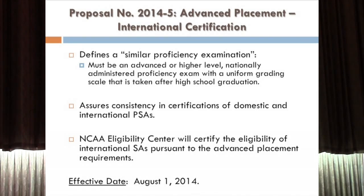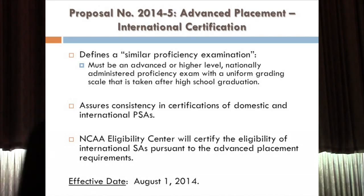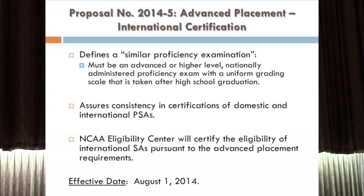On eligibility: this one is probably never going to be used by anyone in this room, but let's cover it quickly. There is an exception to the initial eligibility requirements that says if a student comes in as a freshman with at least 24 credit hours of advanced credit — AP, IB, however that comes in — and for whatever reason doesn't meet the traditional initial eligibility standards, that student can be considered a qualifier and immediately eligible. If you're coming in with 24 hours of advanced standing credit, you're a fifth of the way there for most degree programs.